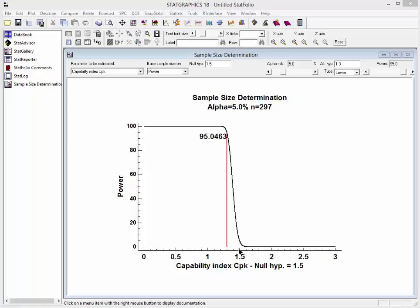In this case, there's only a 5% chance of rejecting the null if CPK is actually 1.5. If it shrinks to 1.3, there's a slightly better than 95% chance of rejecting the null.